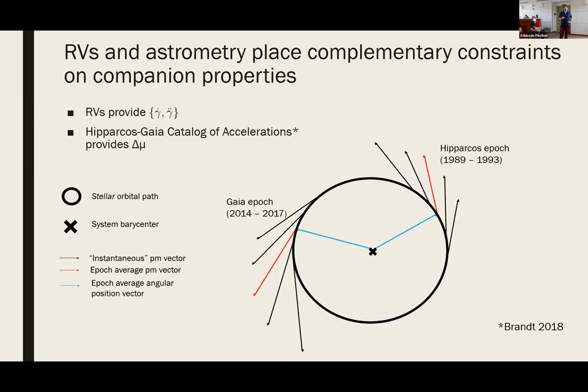Another question: why is the stellar path shown as purely circular? The answer is that it doesn't need to be circular — this is a simplified and zoomed-in stellar orbit. The outer companion would be somewhere much farther away depending on its mass, and in the general case does not need to be circular at all.